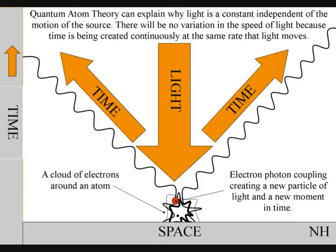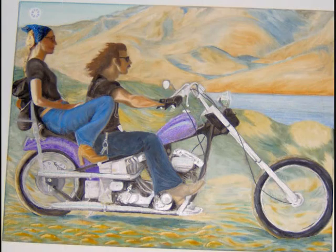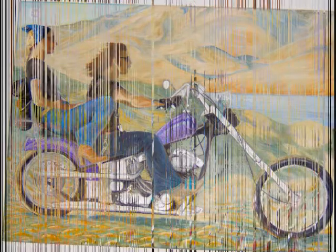There will be no variation in the speed of light, because time is being created continuously, at the same rate that light moves.